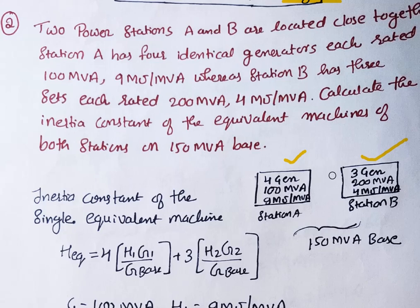Since the stations are located close together, the generators of both stations can be treated as a single equivalent large machine. The equivalent inertia constant is: H_eq = (4 generators × H1 × G1 / G_base) + (3 generators × H2 × G2 / G_base), where G_base = 150 MVA, G1 = 100 MVA, H1 = 9, G2 = 200 MVA, H2 = 4.